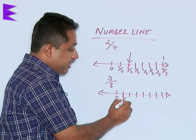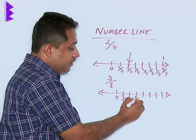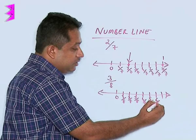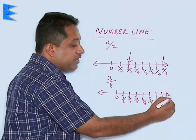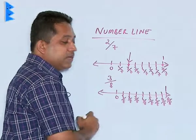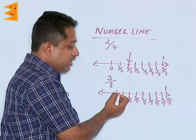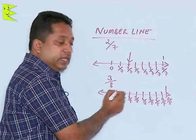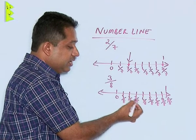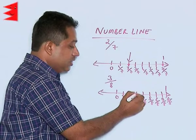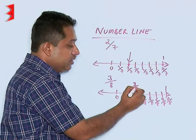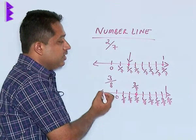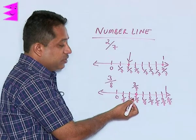The divisions are labeled as 1 by 8, 2 by 8, 3 by 8, 4 by 8, 5 by 8, 6 by 8, 7 by 8, and finally 8 by 8 which is 1. Between 0 and 1 we have these divisions, and 3 by 8 is the third division after 0. So 3 by 8 will be this particular point. This is how we plot positive rational numbers on the number line.